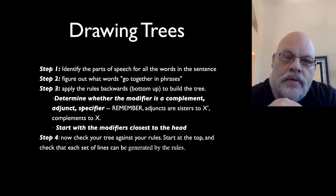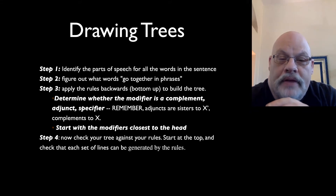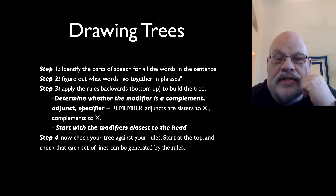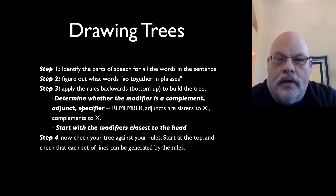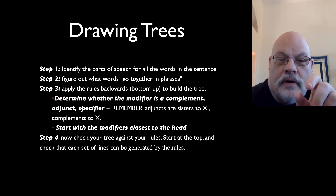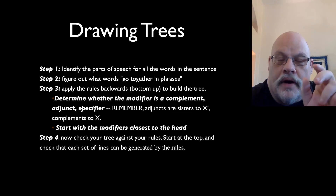One of the most common errors people make in X-bar trees is drawing adjuncts in as complements, or adjuncts in as specifiers, not noticing that they're doing so. You have to be really careful to make sure that if something is an adjunct, it's drawn as a daughter of a bar and sister to a bar. If it's a complement, it's daughter of a bar and sister to a head. And if it's a specifier, it's daughter of a phrase and sister to a bar.